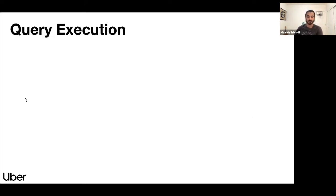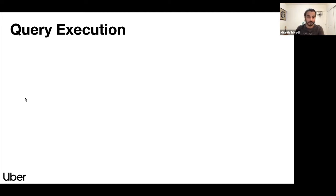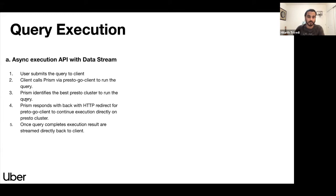First query execution. Now query execution is the most important feature of Prism because it's actually running the query on the Presto cluster. So Prism is written in Golang. So it uses Presto go client to interact with Presto clusters. There are two main modes of running a particular query. We call it async execution using data stream. And another one is using file descriptor. Now let's see what these two modes mean. The first one is async execution using data stream. This is the preferred approach and 100% of our queries are currently using this approach.